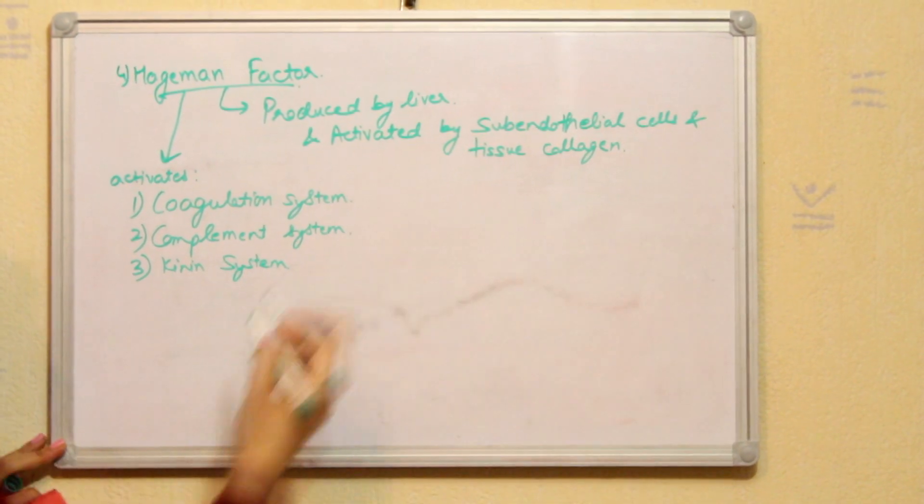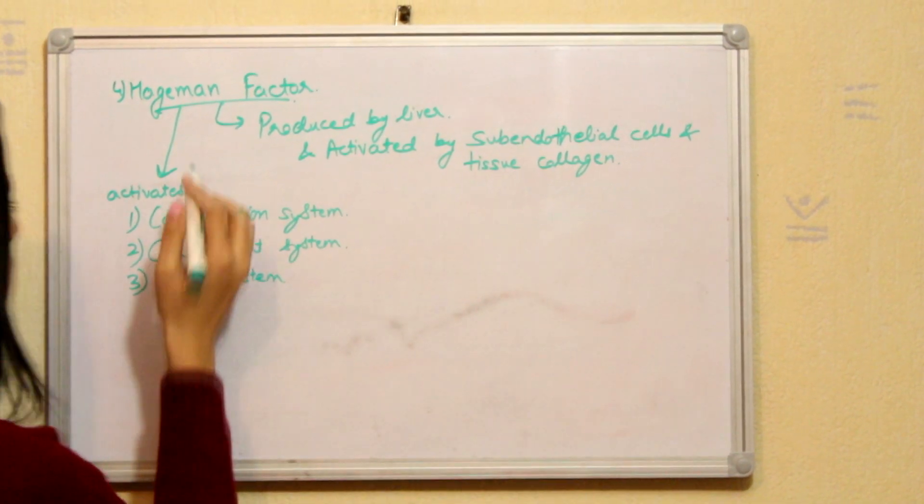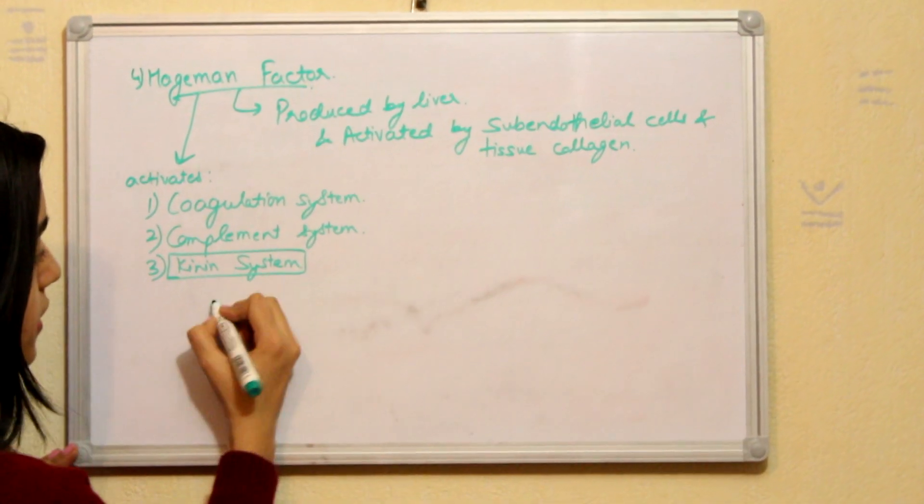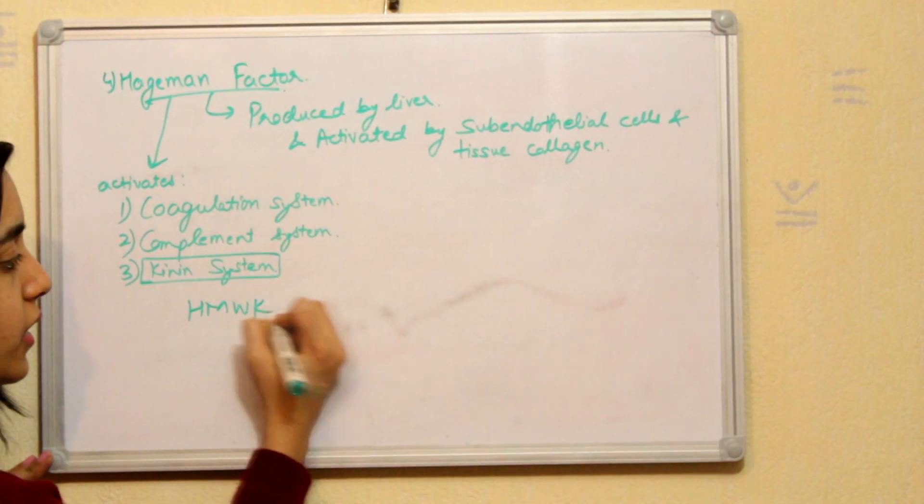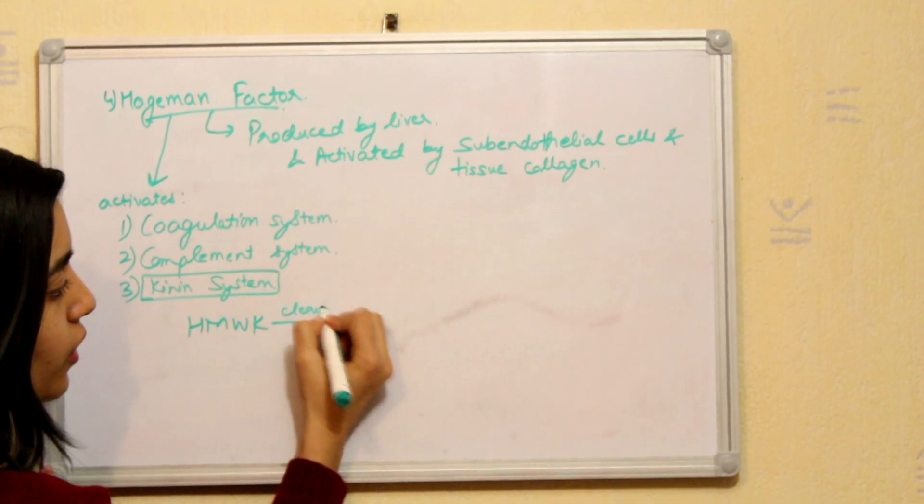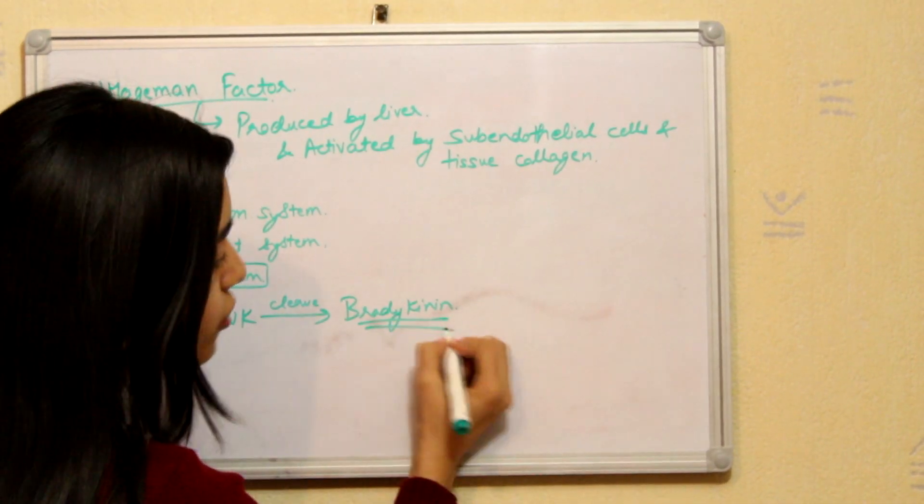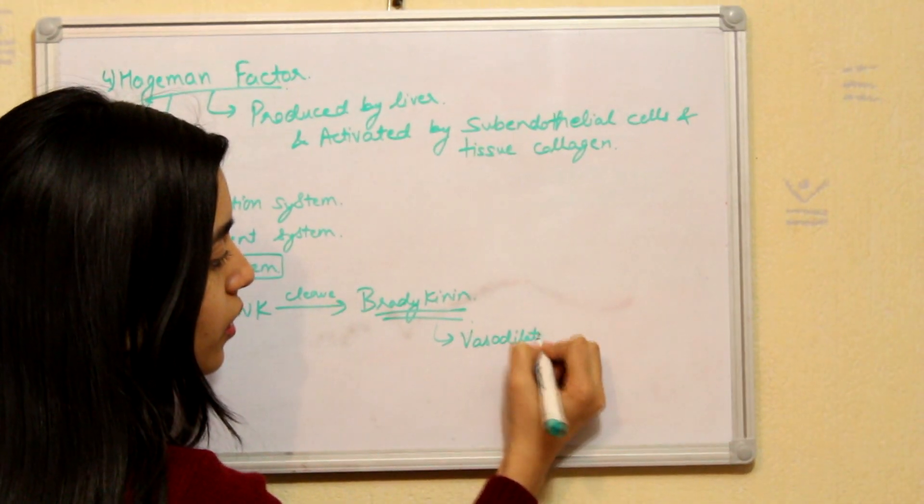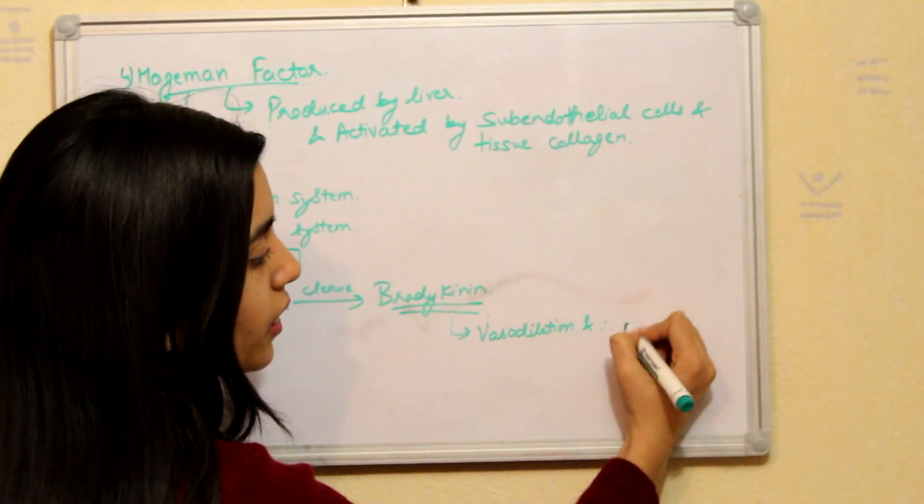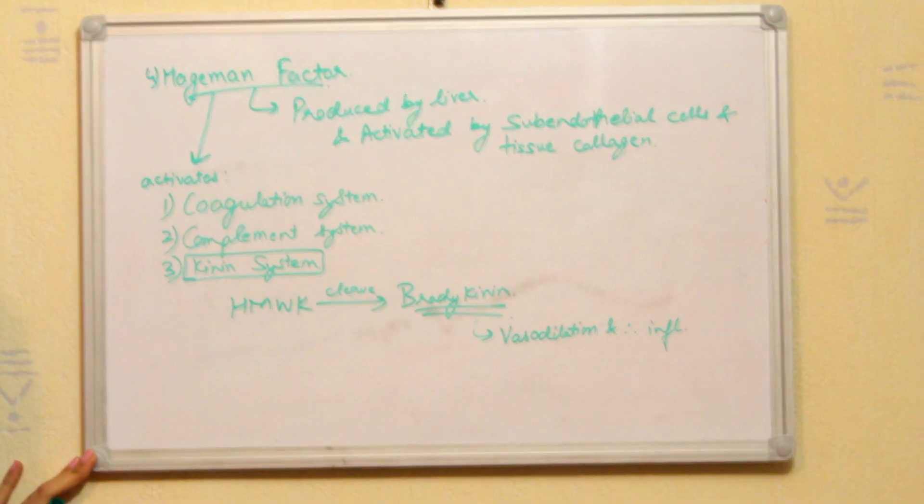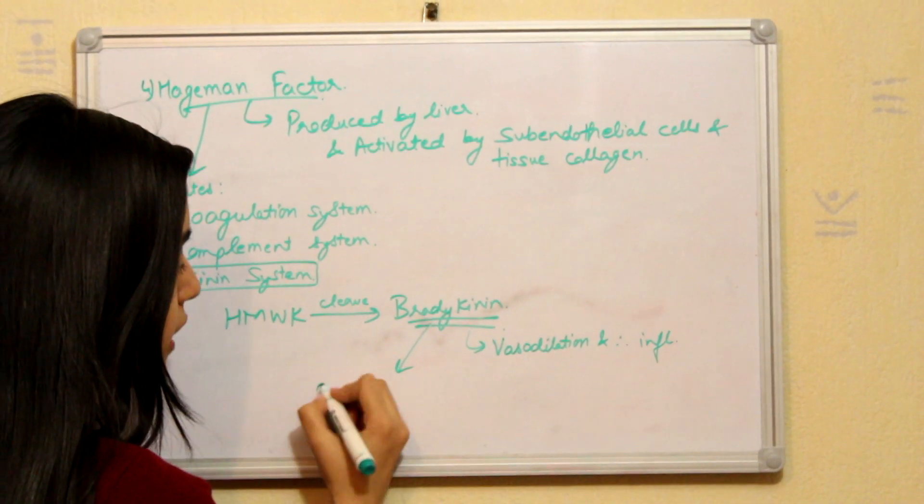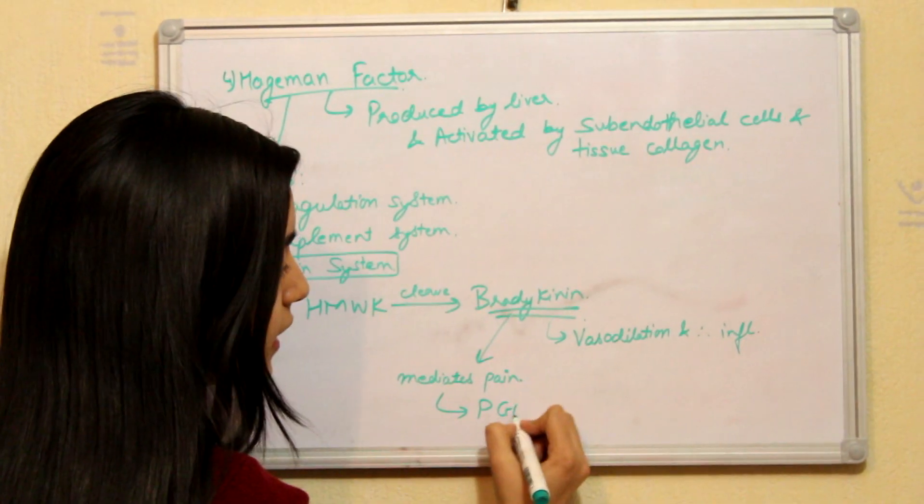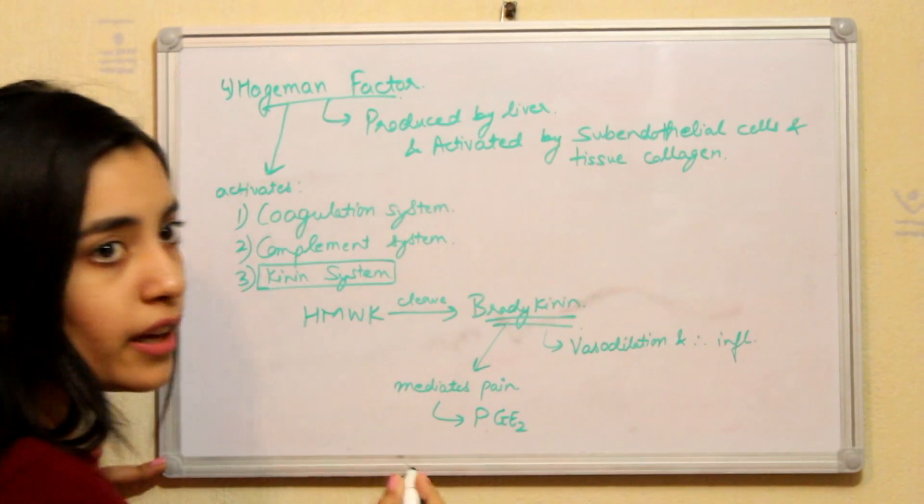For the first two systems, we will discuss in next videos. But here in acute inflammation, kinin system is more important. In this system, high molecular weight kininogen is cleaved to form bradykinin. And you should learn it that bradykinin results in vasodilation and thus inflammation. And a very important factor here is that bradykinin also mediates pain. Another factor that we have already discussed that mediates pain is prostaglandin E2 which is produced by COX enzyme.